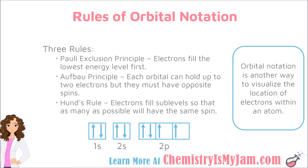The first rule is the Pauli Exclusion Principle. This says that electrons fill the lowest energy level first. In the case of oxygen, that means that the electrons would fill the 1s sublevel, then they would go to the 2s, and then they would go to the 2p. So electrons will fill the lowest energy level that is available to them before they go to a higher energy level.